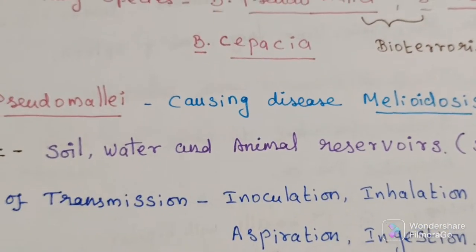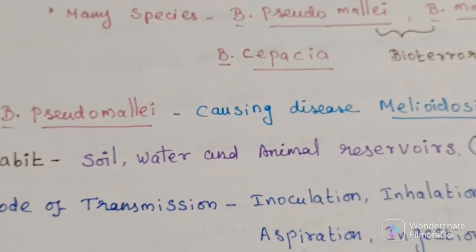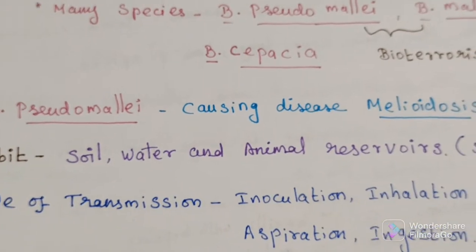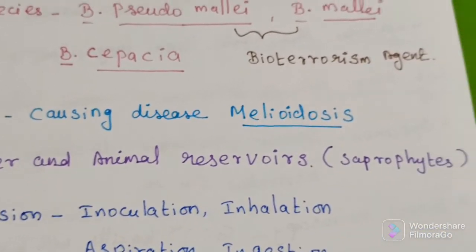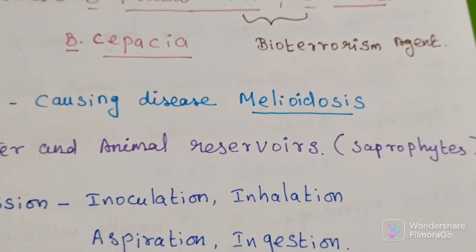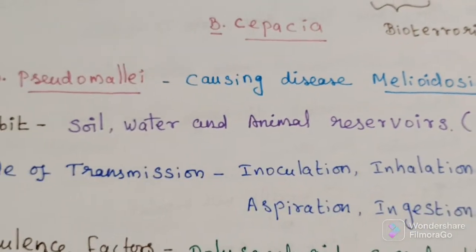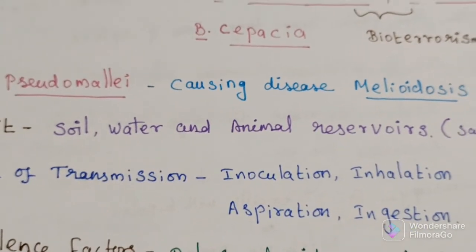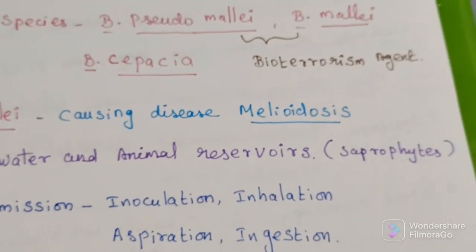Burkholderia pseudomallei is found in soil, water, and animal reservoirs. It is a saprophyte, meaning it lives in the environment in soil, water, and animal reservoirs.